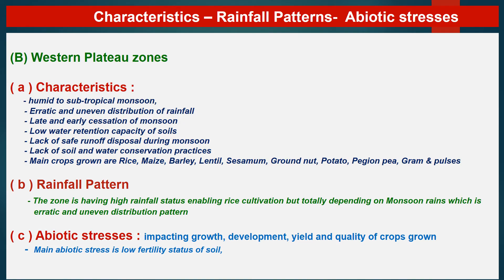The Western Plateau zone characteristics include humidity of tropical monsoon, erratic and uneven distribution of rainfall, late and early cessation of monsoon, low water retention capacity of soils, lack of safe runoff disposal during monsoon, and lack of soil and water conservation practices. Main crops grown in this region are rice, maize, barley, lentil, sesamum, groundnut, potato, pigeon pea, gram, and pulse crops.